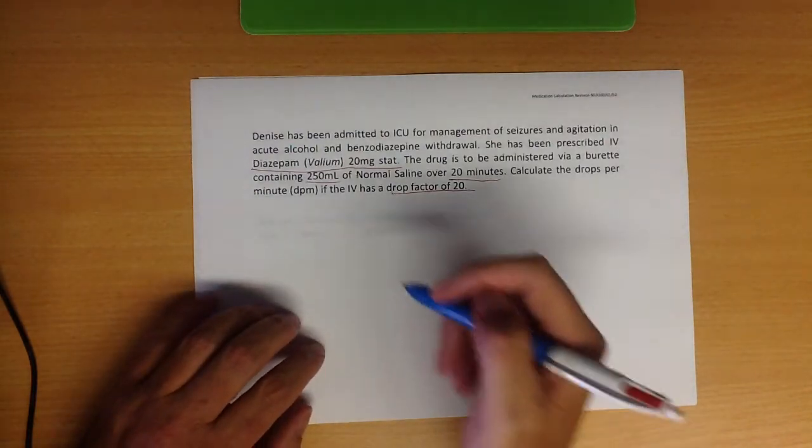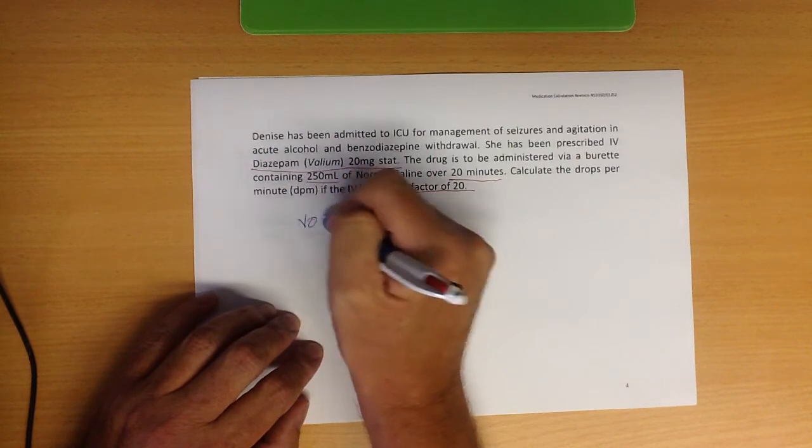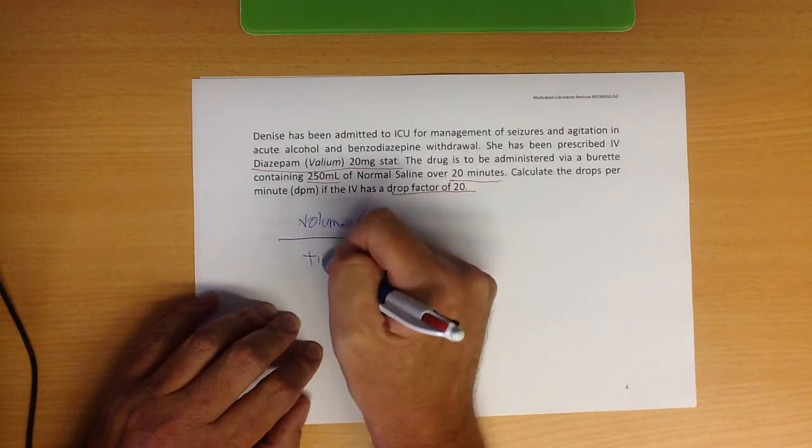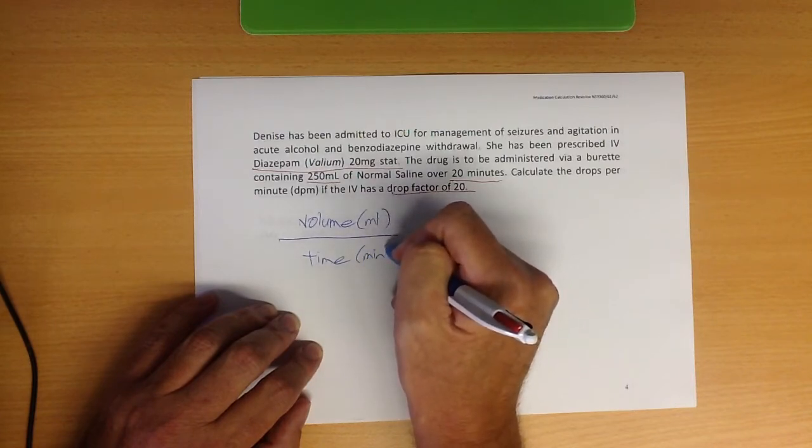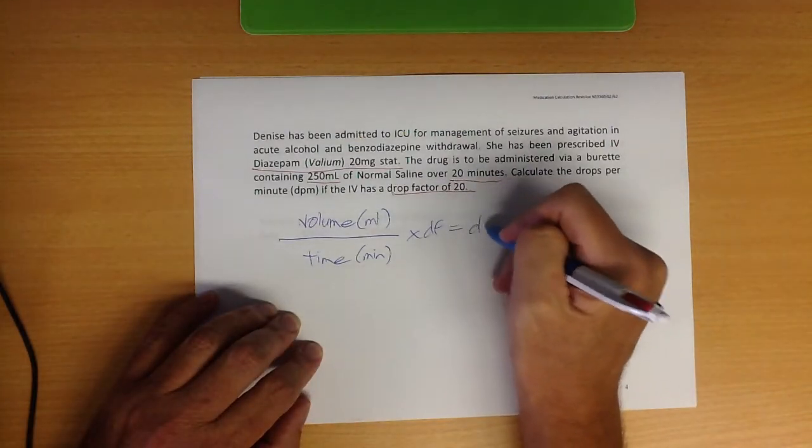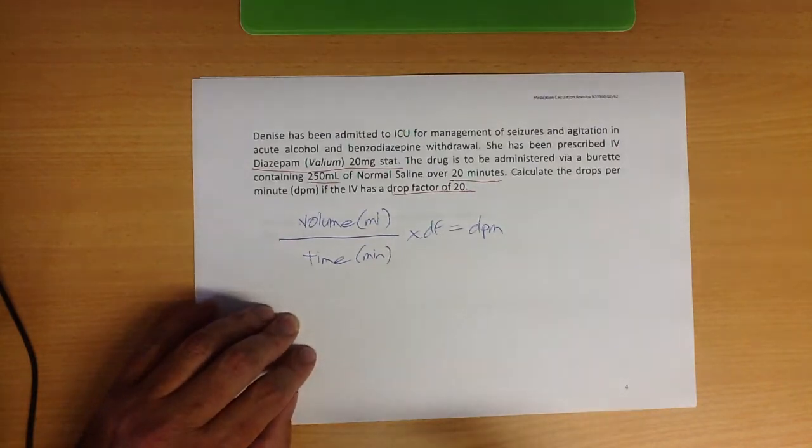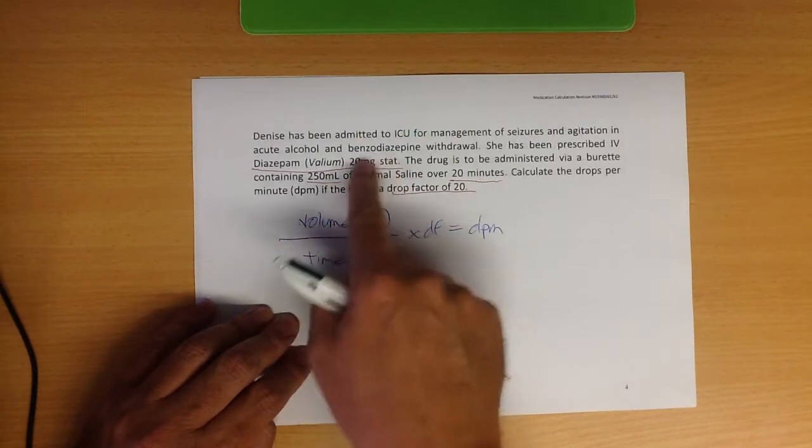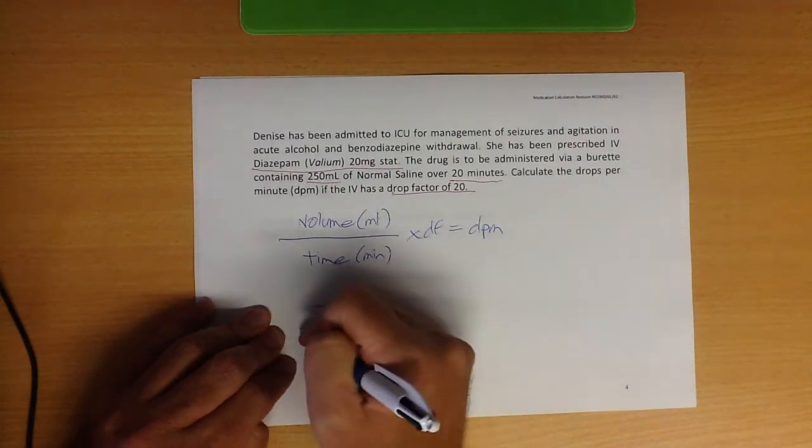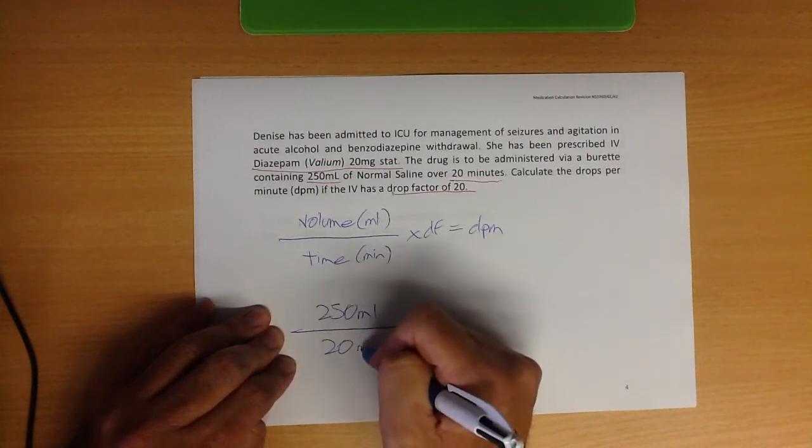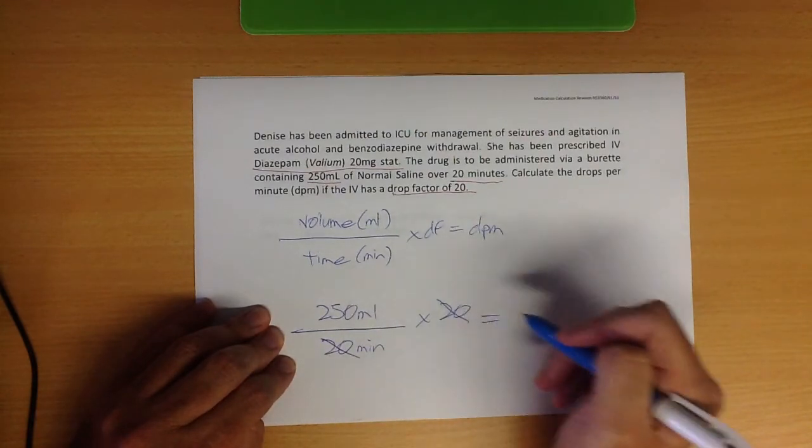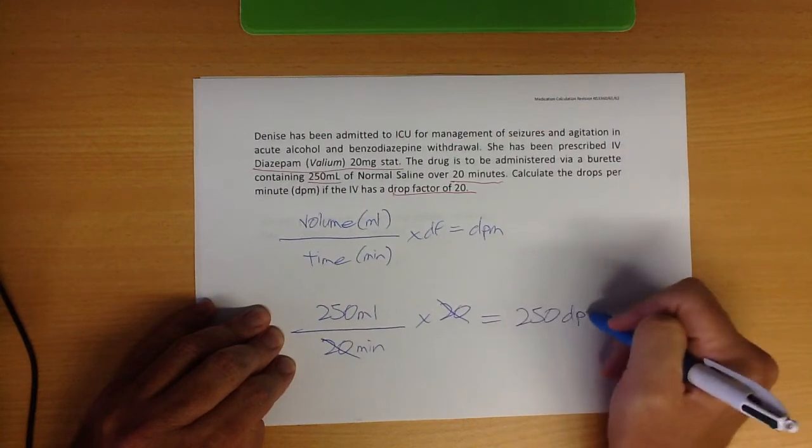Let's just remind ourselves of the equation that we use when we're doing this sort of thing. We put the volume in mils over the time in minutes times the drop factor. The answer will be drops per minute. So that's our formula. Let's get back and pull out the stuff we're going to use. We're going to be giving 250 milliliters over 20 minutes with a drop factor of 20. Simple math when it does that for us, we just cross those ones out. So then it's 250 drops per minute. Really easy.